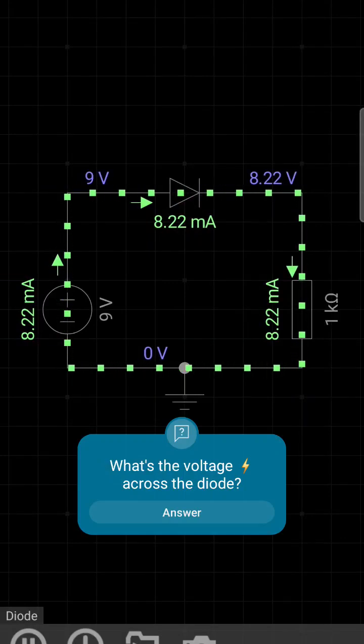Okay, so what you see here is a simple circuit consisting of one diode, one resistor, and one DC voltage source. The DC voltage source, as shown right here, is 9 volts.